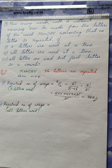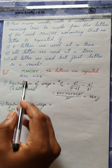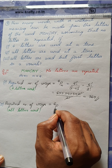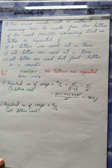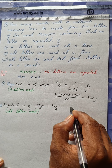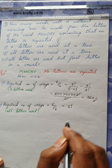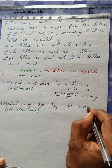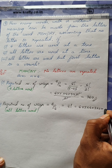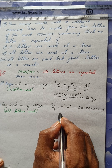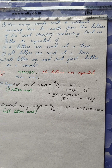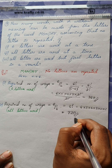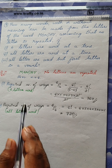For the second condition, all letters are used at a time. There are six letters, so all six can be arranged in 6P6 ways. We know nPn = n!, so 6P6 = 6! = 6×5×4×3×2×1 = 720. So in 720 ways you can arrange the letters of MONDAY using all letters.